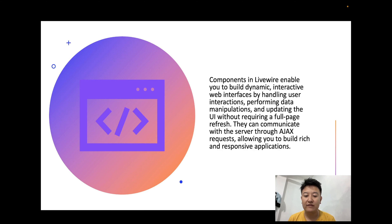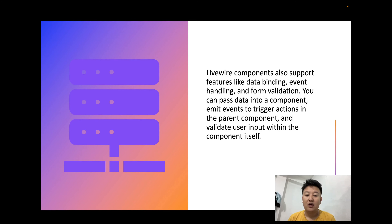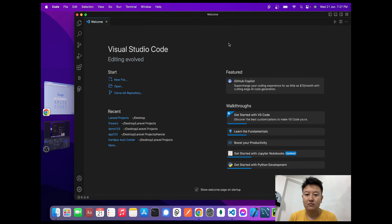Components in Livewire enable you to build dynamic, interactive web interfaces by handling user interaction, data manipulation, and updating the UI without requiring a full page refresh. They communicate with the server through AJAX requests, allowing you to build rich and responsive applications. Livewire components also support features like data binding, event handling, and form validation. You can pass data into the component, emit events to trigger actions in the parent component, and validate user input within the component itself.